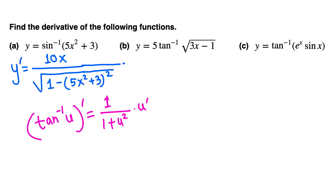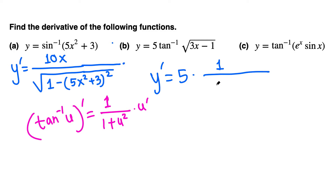For part b, y prime equals: the 5 out front survives, so it's 5 times the derivative of tangent inverse of u. That gives 5 times 1 over (1 plus u squared), where u is square root of 3x minus 1. Note that squaring the square root cancels, giving 1 over (1 plus (3x minus 1)), times the derivative of u.